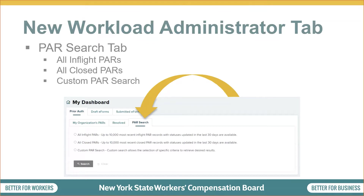Number two, all closed PARs. Search results will return up to 10,000 PAR records that were responded to or assigned by that workload administrator, completed the PAR process, and have a closed status in the last 30 days. And lastly, number three, custom PAR search. This allows the selection of specific criteria to retrieve desired results for any PAR the workload administrator needs to respond to, has assigned, has responded to, or may require response in the future.